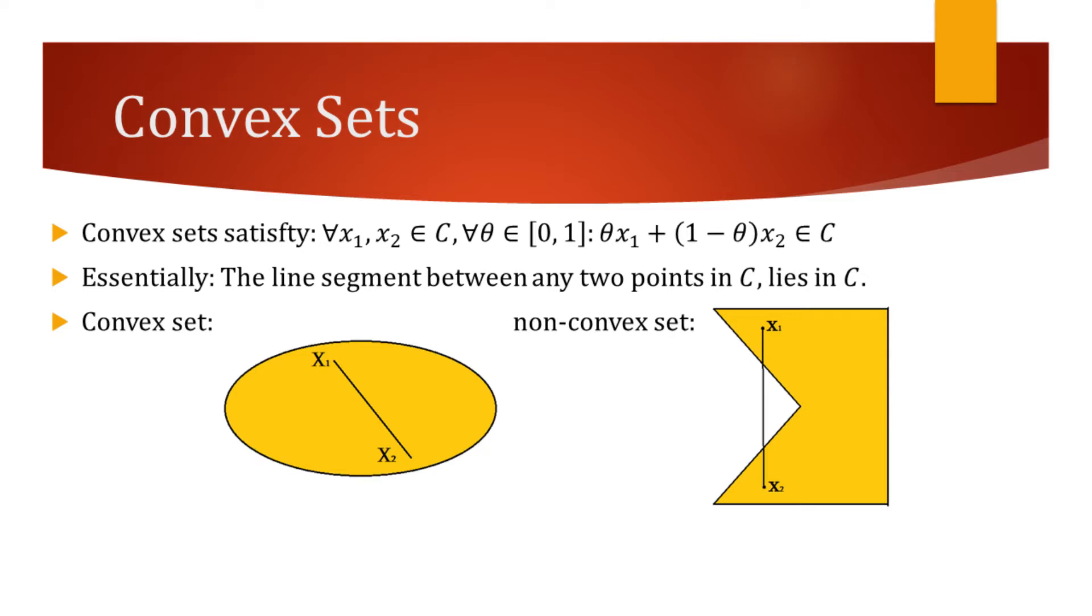What this condition essentially means is that the line segment between any two points in this set must also lie in this set. For the example of a convex set, consider the figure on the left. No matter which two points we pick from this set, the line segment between these points will always lie in this set.